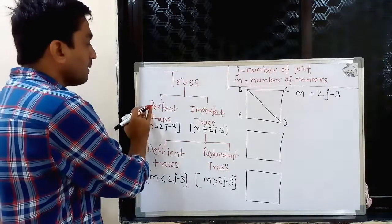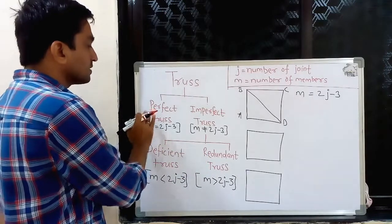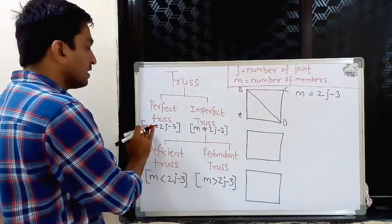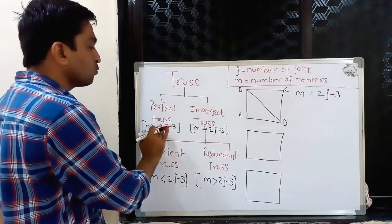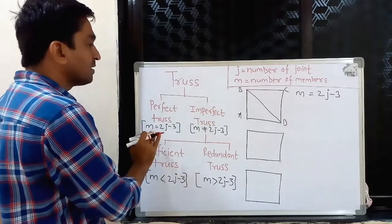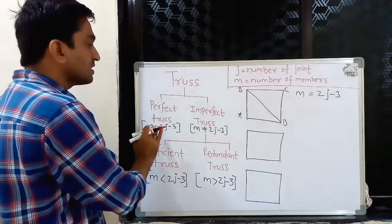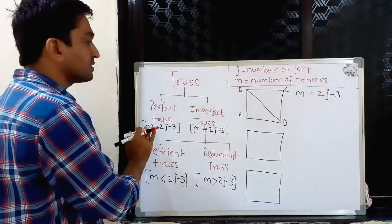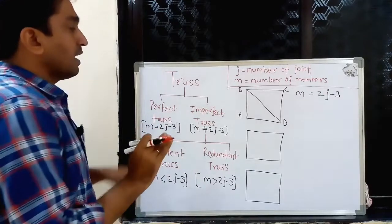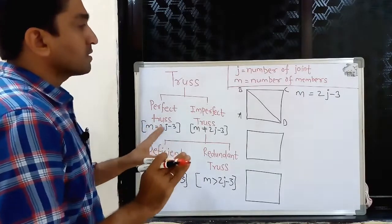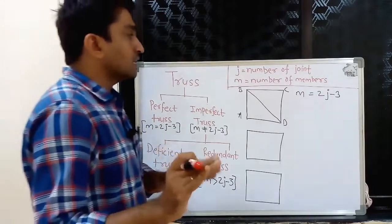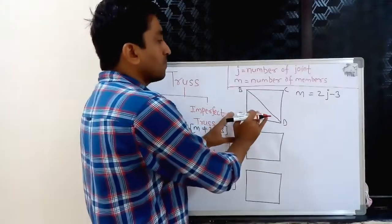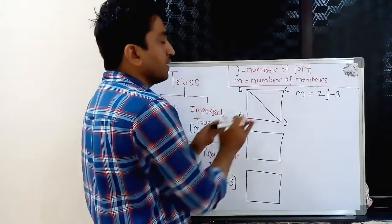A perfect truss satisfies the mathematical condition M is equal to 2J minus 3. Let us discuss what is meant by a perfect truss. The concept of a perfect truss can be explained with the given example as shown in the figure.